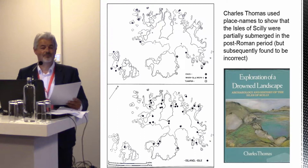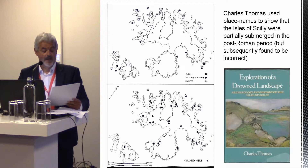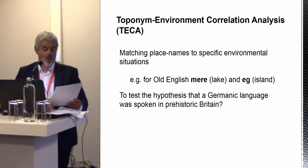In fact, this has since been proven to be wrong — recent environmental work done on the Scillies has shown the inundation was much, much earlier — but the technique is still an important one. Relating landscapes to place names, I call Toponym Environment Correlation Analysis: matching place names to specific environmental situations.